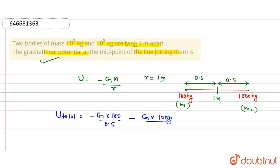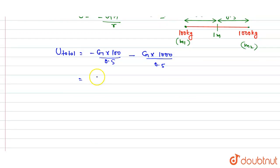On solving, we take the common factors: G is taken to be common and minus is also common. This can be written as -G(100/0.5 + 1000/0.5).